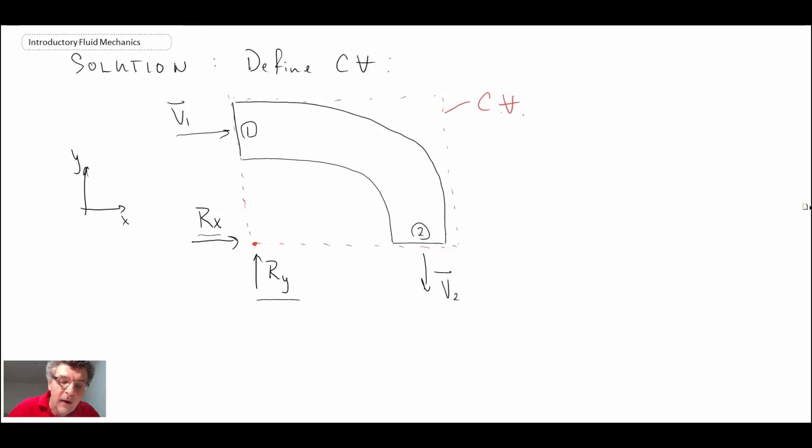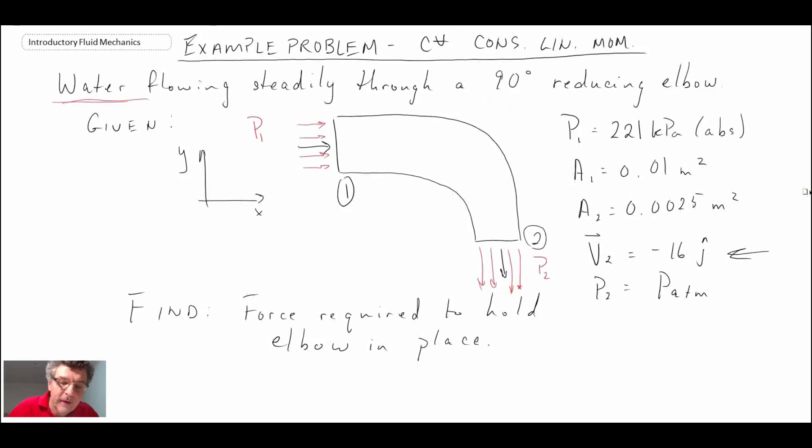So we're in part two of the example problem of solving for the reaction. What we did in the first part of the problem is we used the conservation of mass to determine V1, the velocity coming into the elbow.